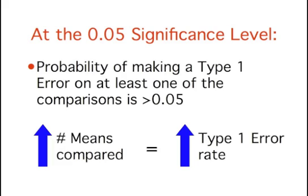Therefore, if you're using the 0.05 significance level, the probability that you would make a type 1 error on at least one of these comparisons is greater than 0.05. And the more means that are compared, the more the type 1 error rate is inflated.